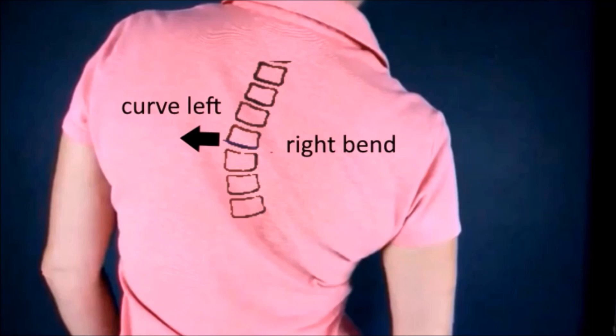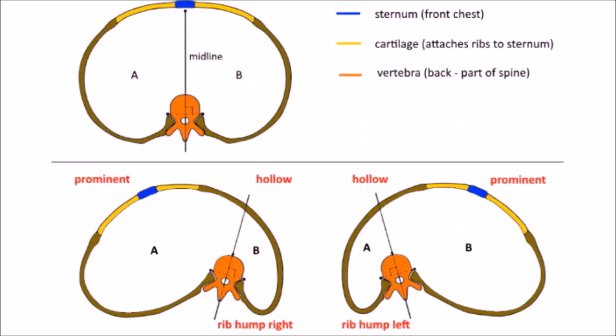As the vertebra twist or rotate, the ribs that attach to each vertebra are dragged along, causing the ribs on one side of the body to push backward, giving the characteristic rib hump appearance seen in thoracic scoliosis. The front ribs on the opposite side are pushed forward, often making the chest appear more prominent on that side.